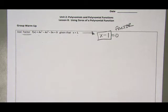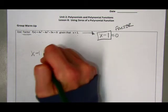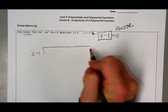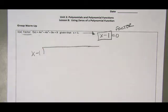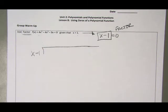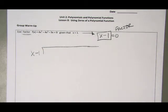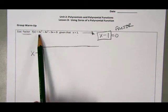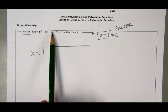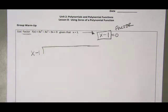We now take that first factor, x minus 1, and use it to divide into our original cubic function. A couple things about our cubic function - we want to first check that it's in standard form, which it is. We have our x cubed, x squared, x to the first power, and then no x. So we have everything in descending order, in standard form.